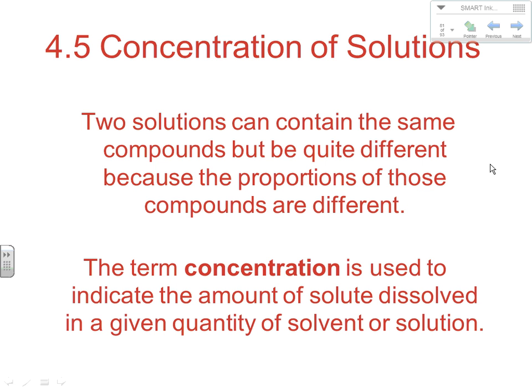Two solutions can contain the same compounds but be quite different because the proportions of those compounds can be very different. The term concentration is used to indicate the amount of a solute dissolved in a given quantity of solvent or solution. Besides what chemical is present, sometimes even more importantly is what concentration of that substance is there, and there are a number of different ways we have of measuring concentration.